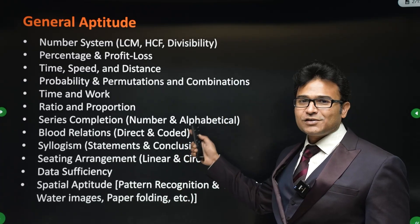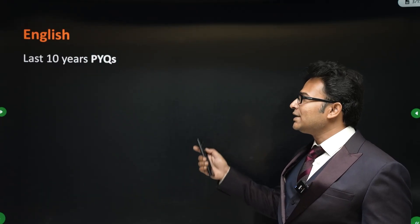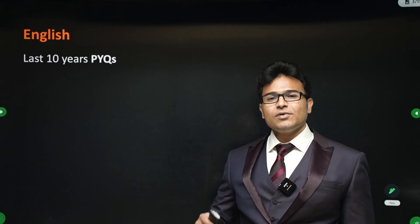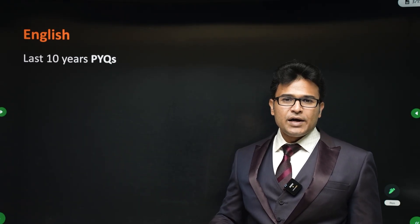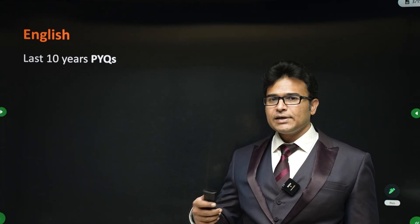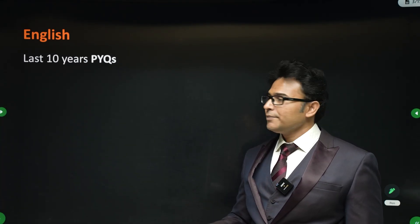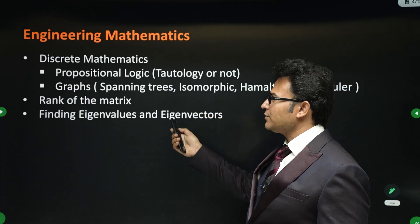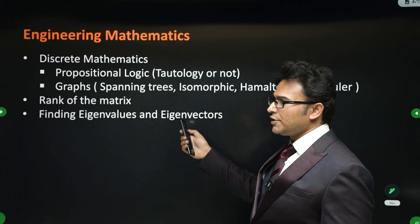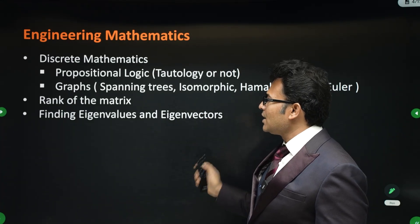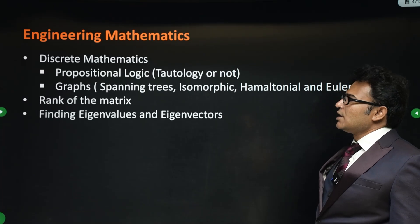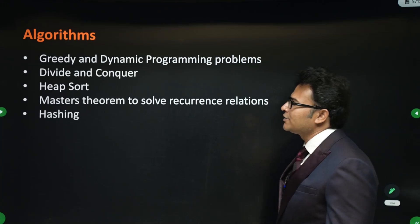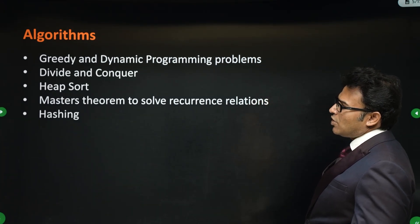For English, there are no specific important topics — just go through all the previous year questions (PYQs) as many as possible. For discrete mathematics, focus on propositional logic and graphs, rank of a matrix, eigenvalues and eigenvectors. For algorithms, focus on greedy, dynamic programming, divide and conquer, heap sort, and master's theorem and hashing.